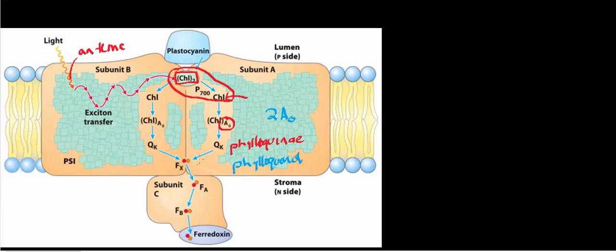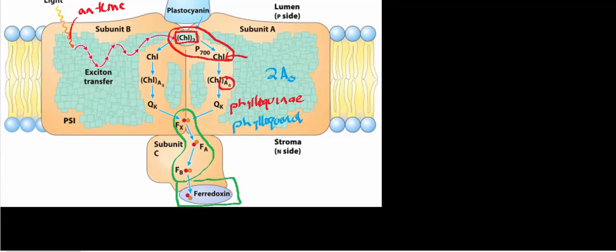The phyloquinone is going to transfer each electron through a series of iron-sulfur centers. The final electron acceptor — or at least the one that attaches to this protein — is a very special protein called ferredoxin, which is also an iron-sulfur-containing protein.